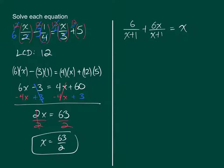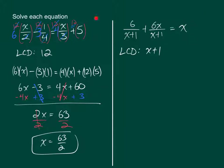In this next example, this is 6 over X plus 1, plus 6X over X plus 1, equals X. Similarly to the last example, we will need to find an LCD. Luckily the denominator is the same for both, so we already know that the LCD is X plus 1. Now this equation is different — this equation is a rational equation, and we call it rational because there are variables in the denominator.